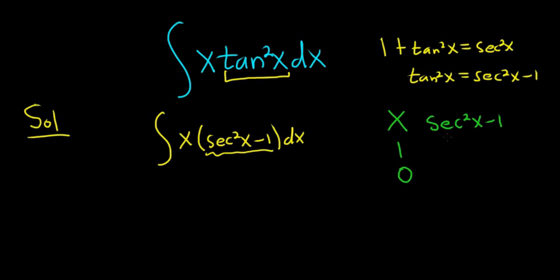So when you integrate secant squared, you get tangent, right? Because the derivative of tangent is secant squared. And when you integrate negative 1, you get x.